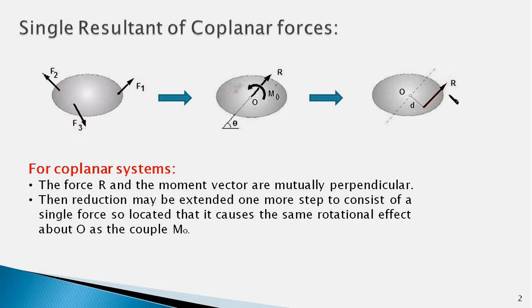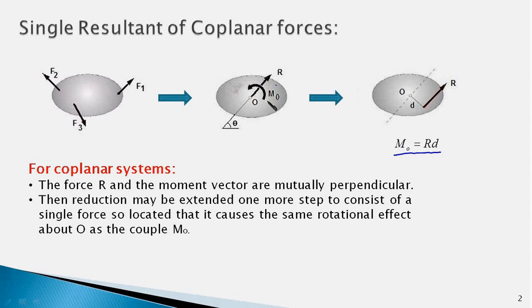You can notice that the actual line of the force R has been moved by an appropriate perpendicular distance d so that its moment about point O is equal to the moment of the couple. So Mo is equal to R·d, and the rotational effect of this single resultant force R about point O is the same as the rotational effect of the couple Mo. Hence the couple can be eliminated and we are left with just a single resultant force.